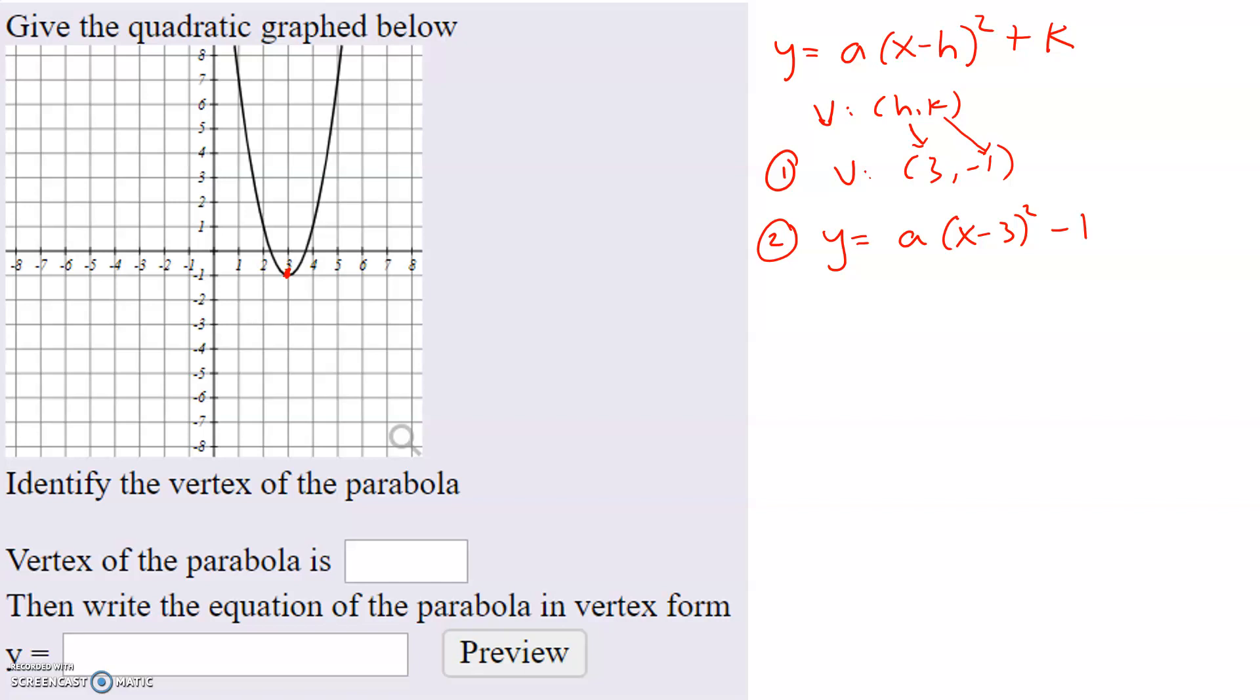Now the equation is almost complete, but we're still missing the a value. So to find the a value, we need to find any point on the parabola. It doesn't matter which point. We just have to pick one point.